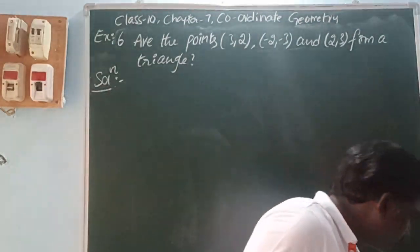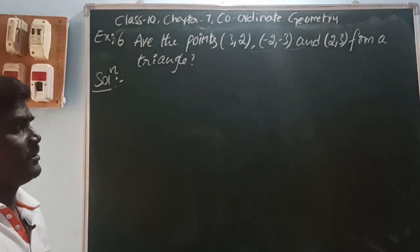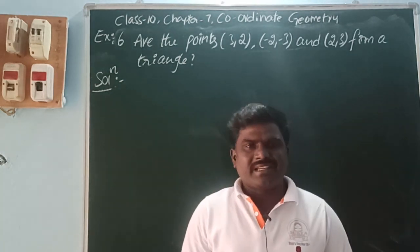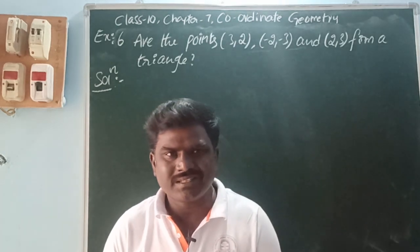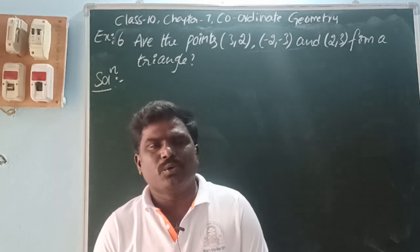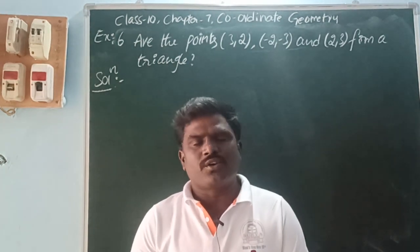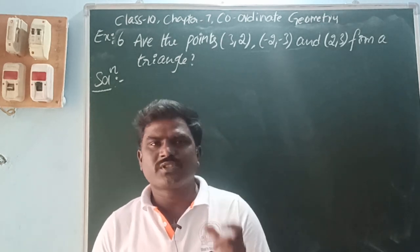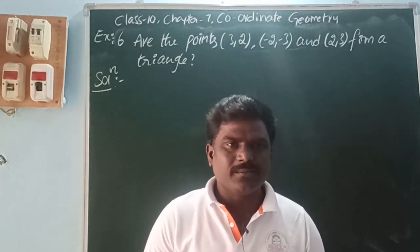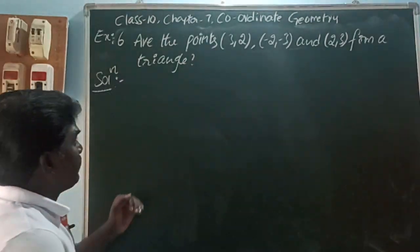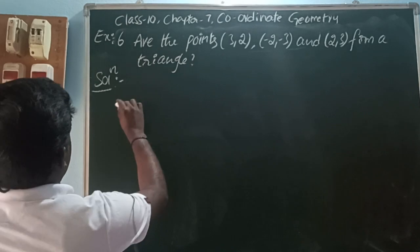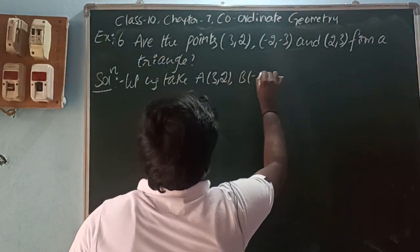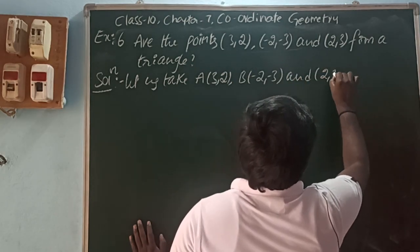Next, Example 6: are the points A(3, 2), B(-2, -3) and C(2, 3) forming a triangle? We know the points form a triangle if the sum of any two sides is greater than the third side. By finding the distances between points using the distance formula, the line segments are called sides. Let A = (3, 2), B = (-2, -3) and C = (2, 3).